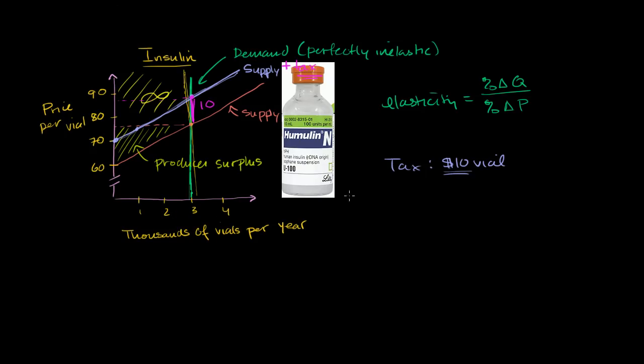Let's think about the total revenue the government will get. The total revenue is $10 times the 3,000 vials per year, so they're going to get $30,000 per year. Now let's think about whose surplus it came out of. This is the tax revenue. The producers are still going to have the exact same producer surplus, so all of that tax revenue came directly out of the consumer surplus.